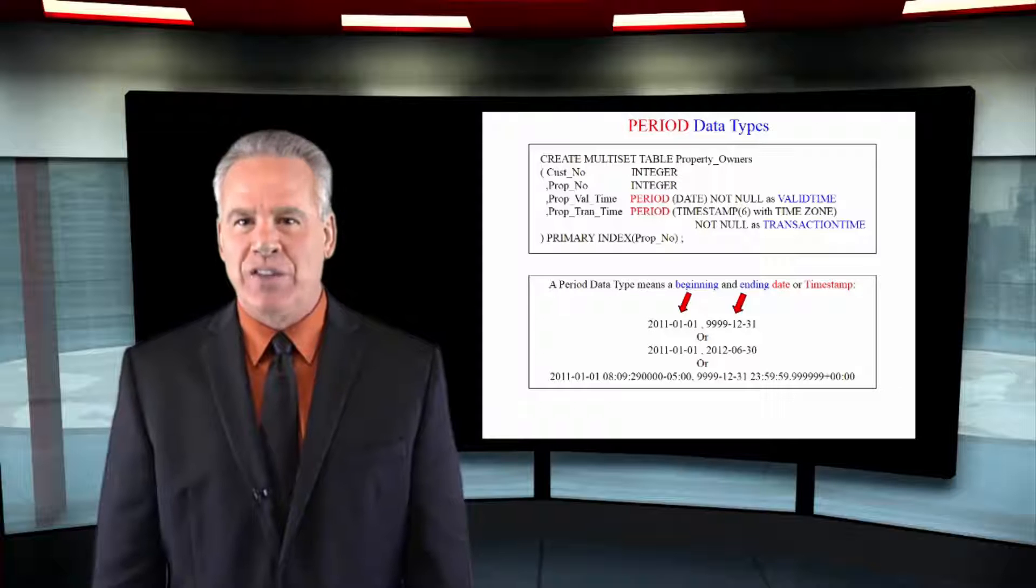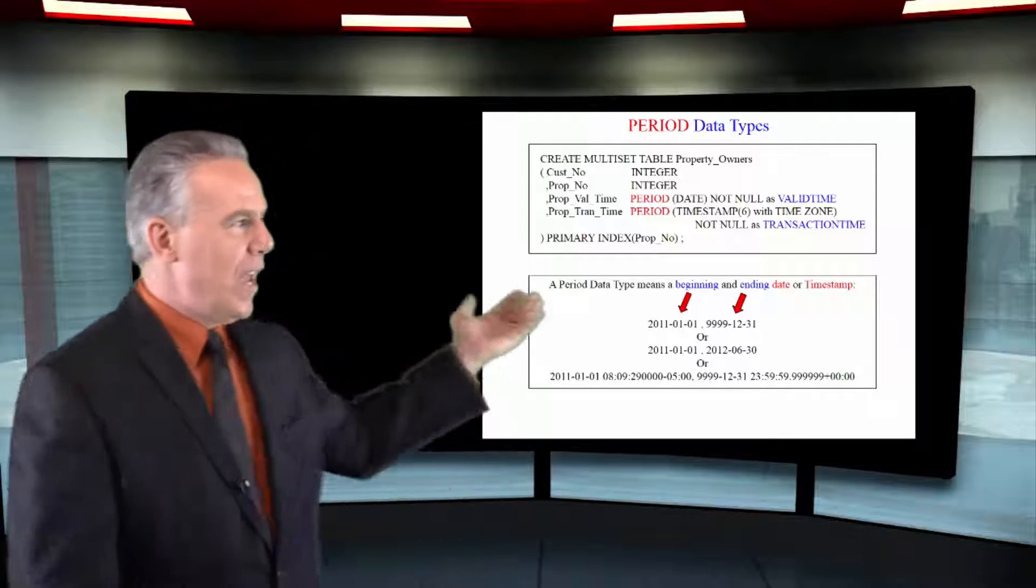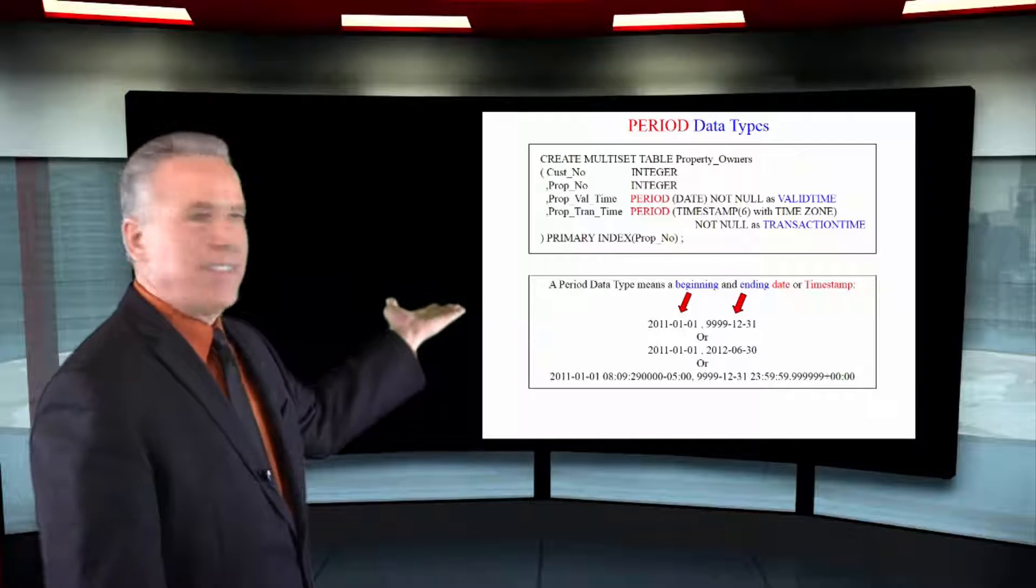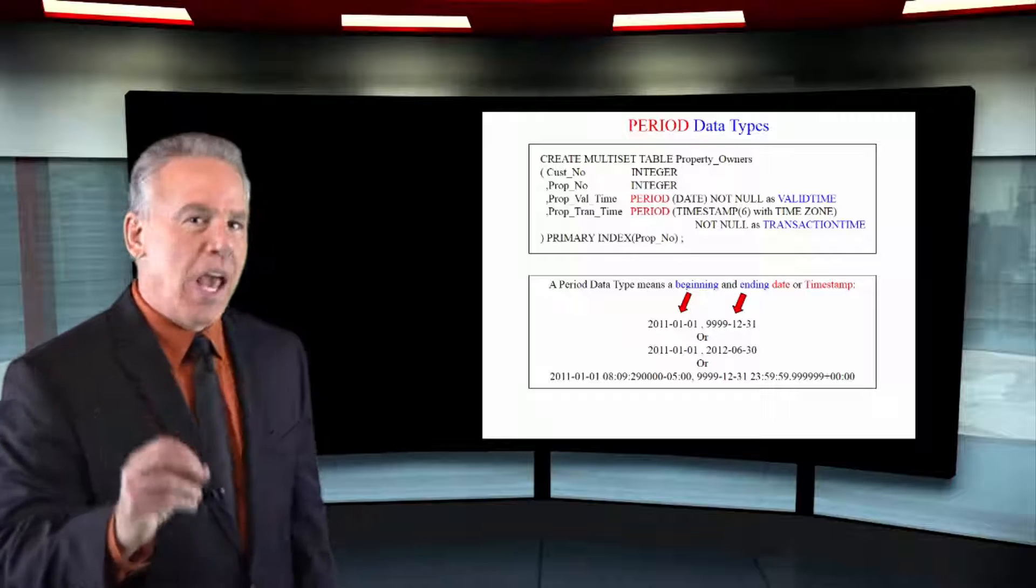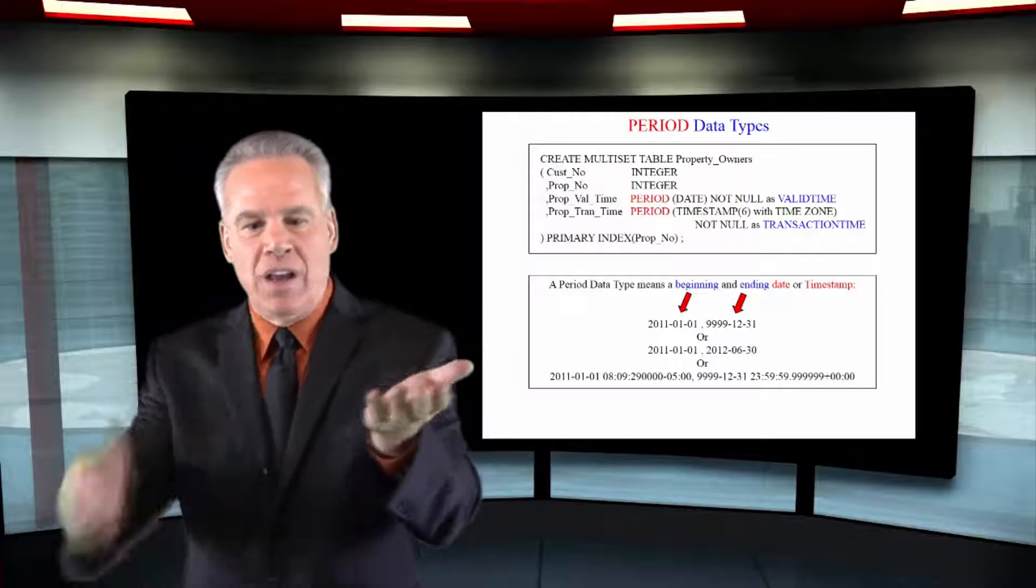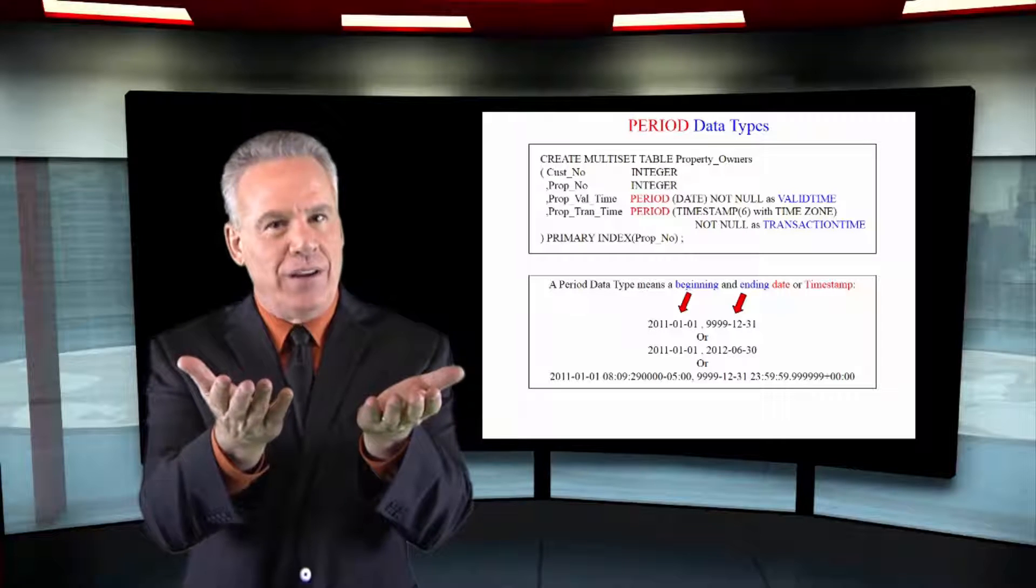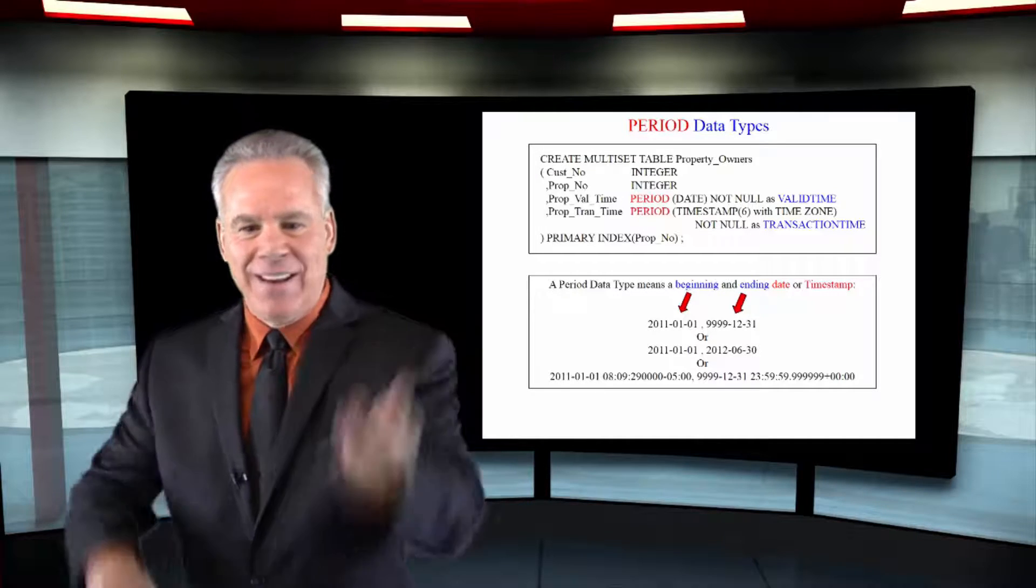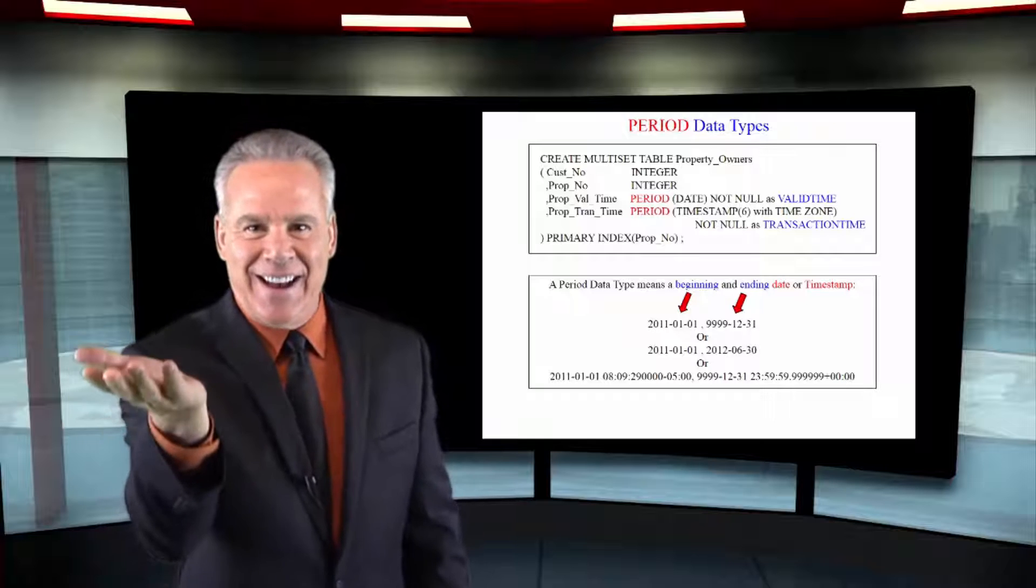As you can see in our example, I have placed in red the word period. That's the period data type. And what that means is that you will get a range of time, a period of time that will have a beginning time and an ending time.